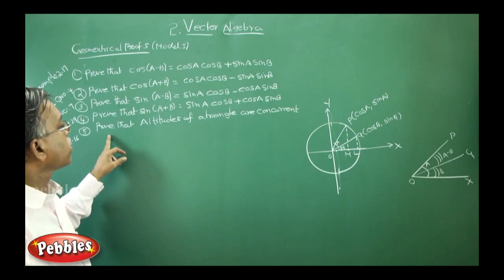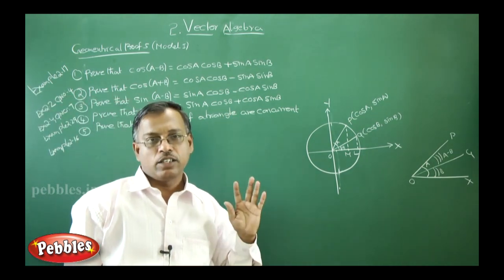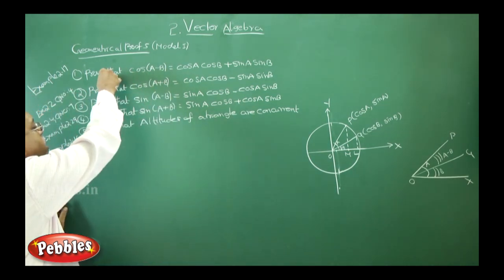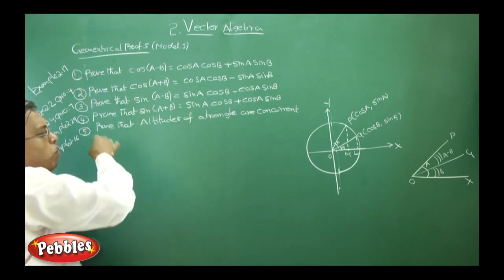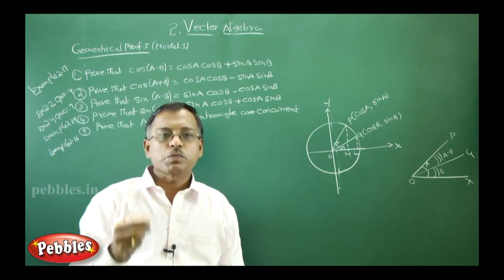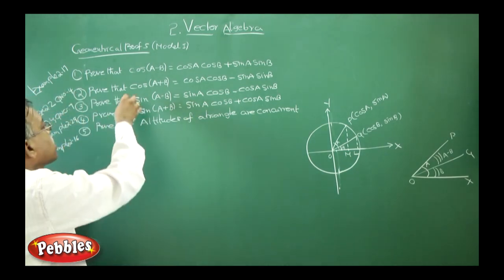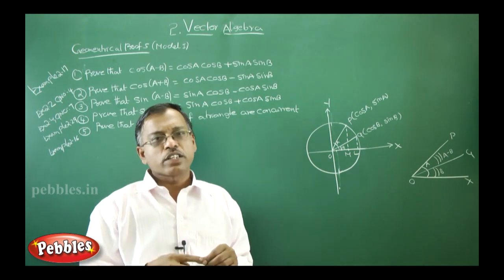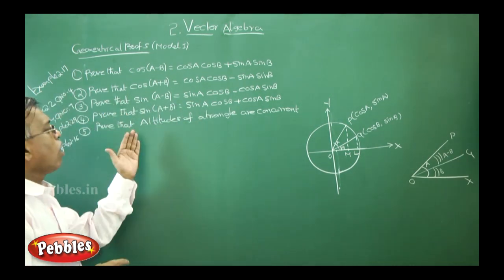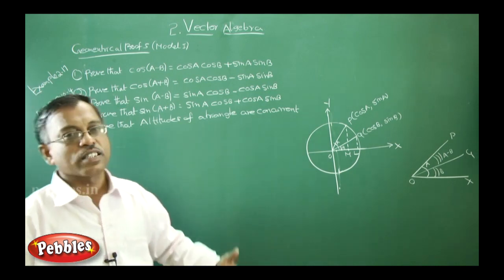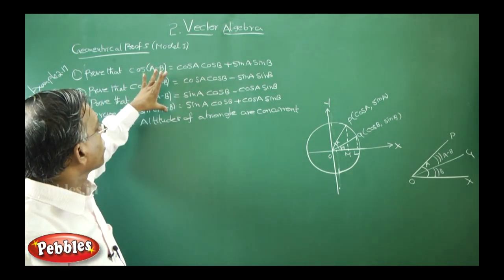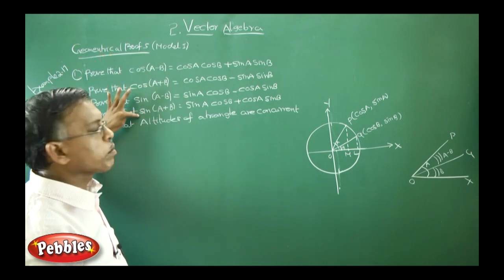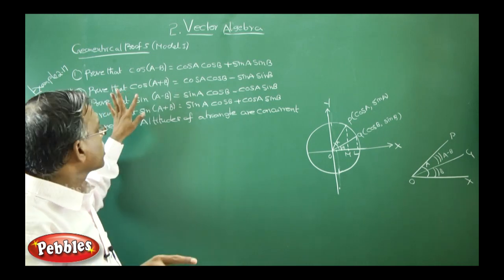Next, prove that altitudes of a triangle are concurrent. In these five problems, cos of A minus B, sin of A minus B, same model. Only thing is small differences. Similarly, cos of A plus B, sin of A plus B, same model. Again, small differences are there. Altitudes of triangle, that is a separate problem. So first four problems, I will explain cos of A minus B and also sin of A plus B. Other two you can try on your own.